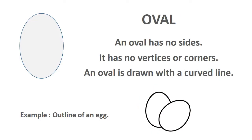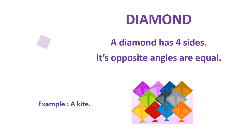Oval. An oval has no sides. It has no vertices or corners. An oval is drawn with a curved line. Example: outline of an egg.